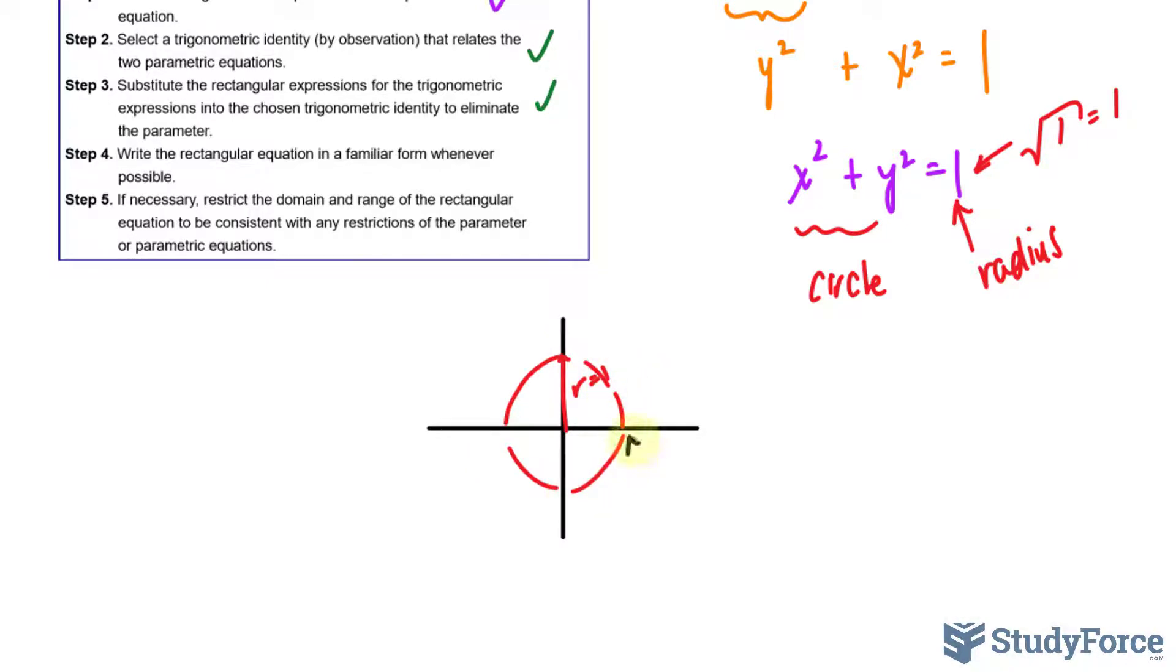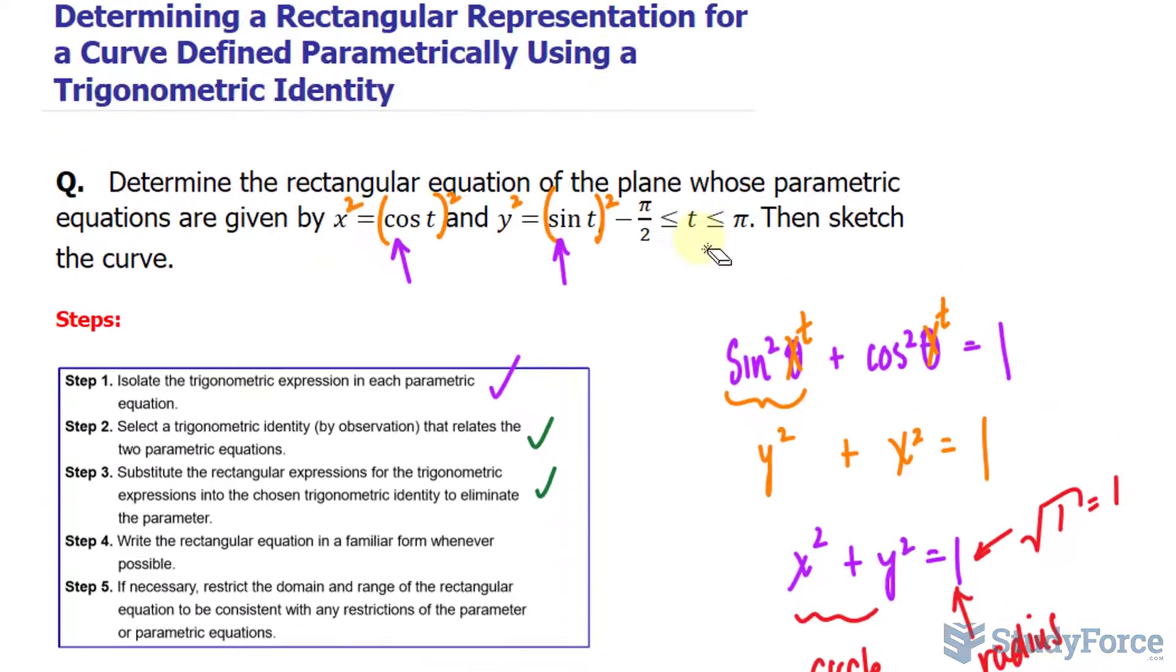So this point, for example, is at one and zero. This point is at zero and one. That point is at negative one and zero. And this one is at zero and negative one.